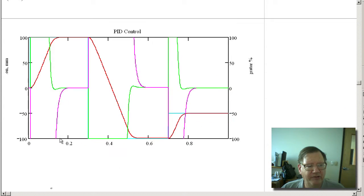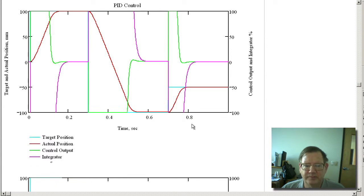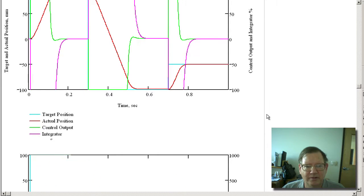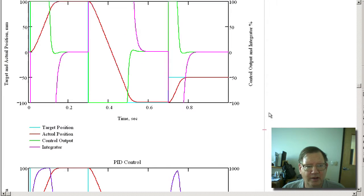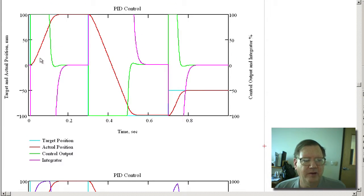So here is the response. This is the position response. We can see the target position does a step up to 100 millimeters. And the actual position goes up to 100 millimeters and doesn't overshoot. The control output saturates at 100%. And that's due to the step jump. And you can see the integrator winds down and then it winds back up to zero. And that's due to the limiting function.